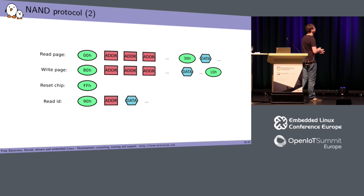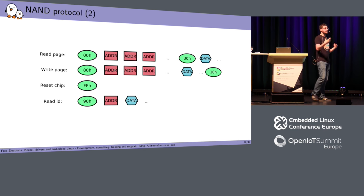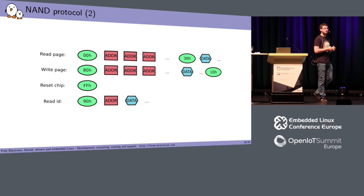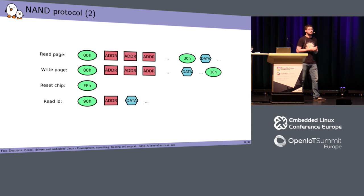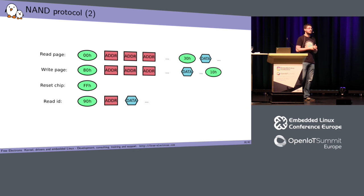Let's take a few examples. The read page command first sends a command cycle of zero, then a few address cycles telling the NAND chip which page should be read, then the 0x30 command cycle, then data cycles to retrieve the data from the NAND chip. Write page is similar, except the last command comes after you transmit the data, because you need to transmit the data before programming the page. Simpler commands include reset, which is just a single command cycle, and read ID — a single command cycle, a single address cycle, and a few data cycles to retrieve the ID.